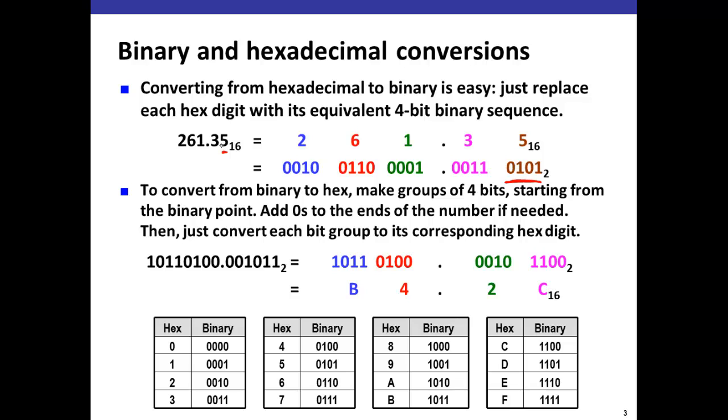For this 261.35 number, we're just going to get the binary representation of 261, put that before the decimal point, and then the binary representations for hexadecimal 3 and 5 and put those after.